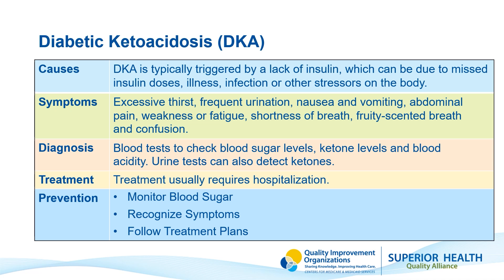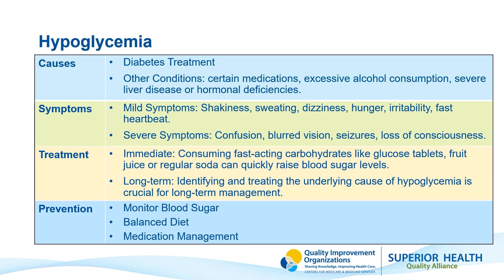Hypoglycemia, also known as low blood sugar, occurs when the level of glucose in the blood drops below the normal range. Glucose is the primary source of energy for your body, especially for your brain. Hypoglycemia can be the result of taking too much insulin or too much of your diabetes medication.